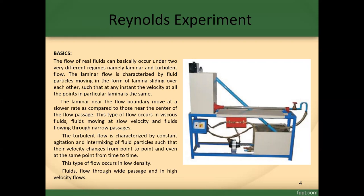Laminar flow occurs in viscous fluids moving at slow velocity and fluids flowing through narrow passages. Turbulent flow is characterized by constant agitation and intermixing of fluid particles such that their velocity changes from point to point and even at the same point from time to time. This type of flow occurs in low-density fluids flowing through wide passages and at high velocity.